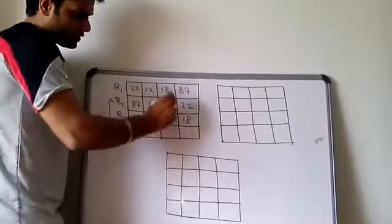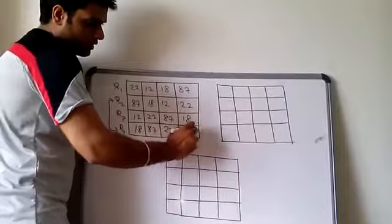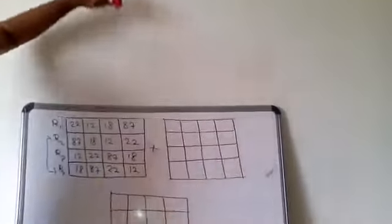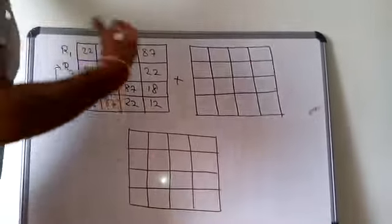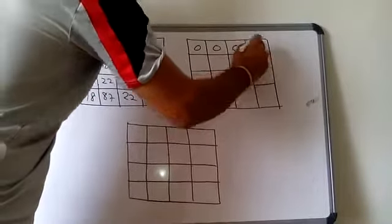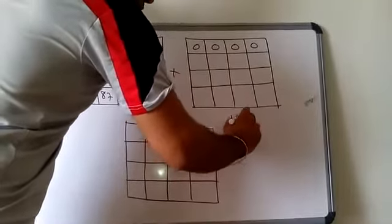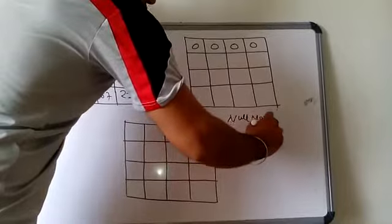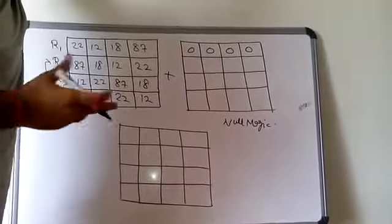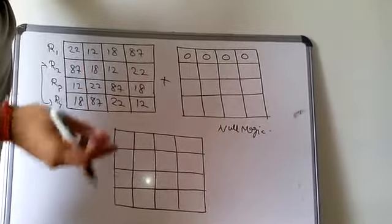Now we will see the new combination of null magic square. Again, the last combination of this is a new combination and a new magic square will generate. Row number 1 is 0, 0, 0, 0. This is called null magic square. Why is this called null magic square? Because the total of the combination, the total of the addition is 0, and the total of the number is 0.